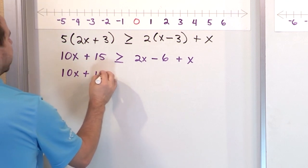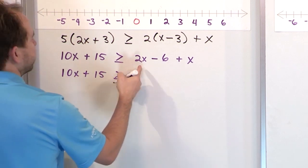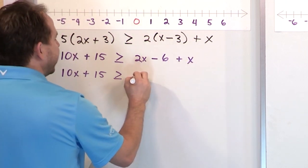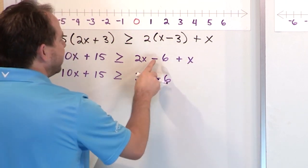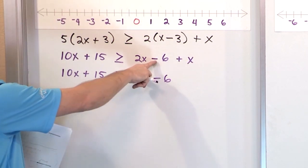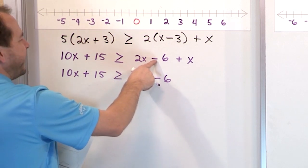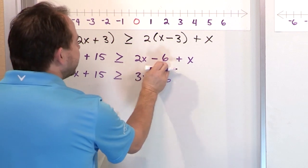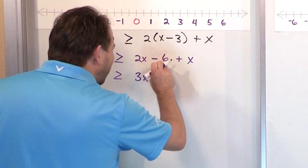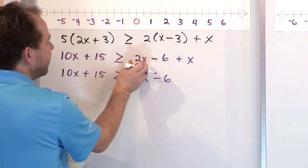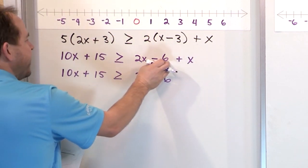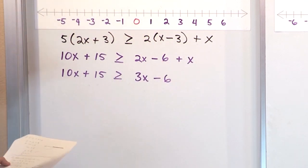We have 10x plus 15 on the left, greater than or equal to. What is 2x plus one more x? That's 3x, and then we have the minus 6. Don't let the sign confuse you — sometimes students think the sign means it's negative. The negative goes with the 6. So this is a positive 2x, this is a positive x, and when you add them, you get a positive 3x. The minus 6 just comes down.